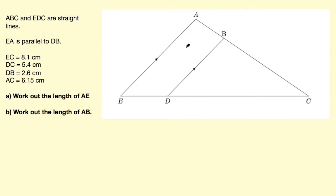And it gives you some lengths here. So EC, this long line here, is 8.1 centimeters. DC is 5.4 centimeters. DB is 2.6 centimeters. And AC is 6.15 centimeters.